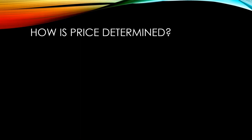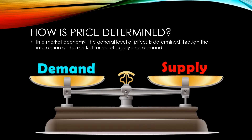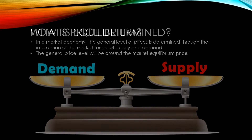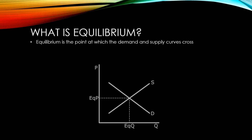In a market economy, the general level of prices is determined through the interaction of the market forces of supply and demand. The general price level will be around the market equilibrium price. Market equilibrium is the point at which the demand and supply curves cross.